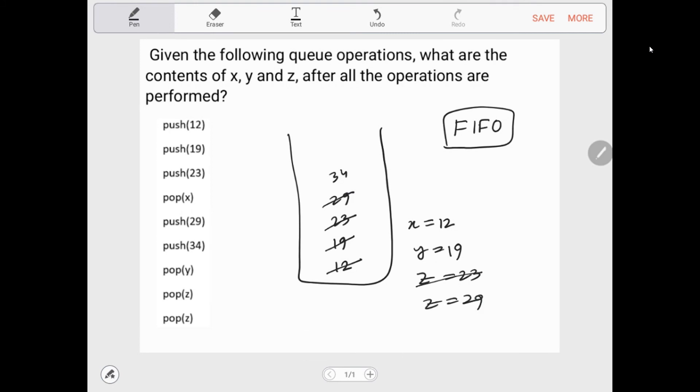So these are the contents of x, y, and z after the queue operations are performed.